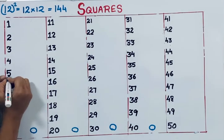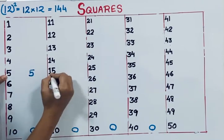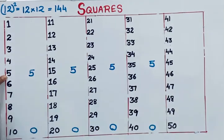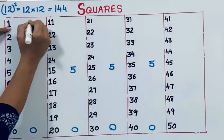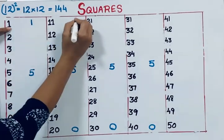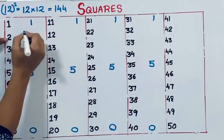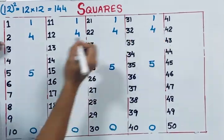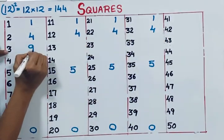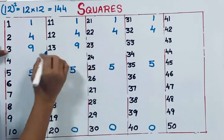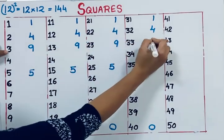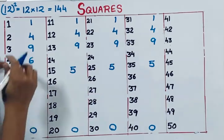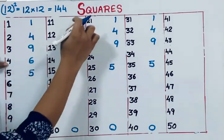If a number ends with 5, its square ends with 5. Next, if a number ends with 1, its square ends with 1. If a number ends with 2, its square ends with 4. If a number ends with 3, its square ends with 9 — so let's fill in 9.